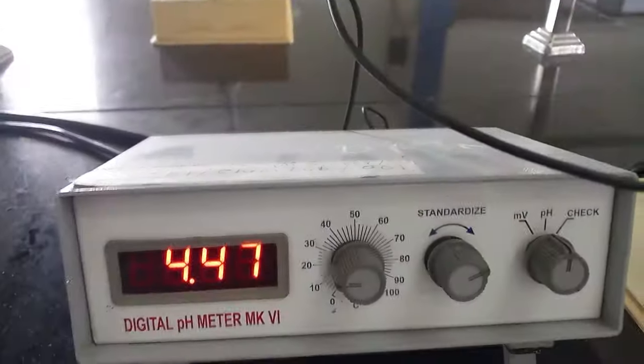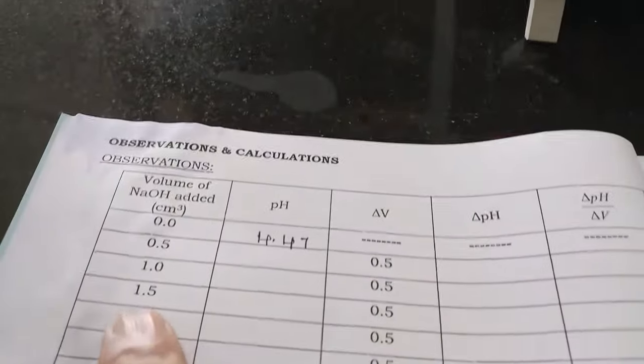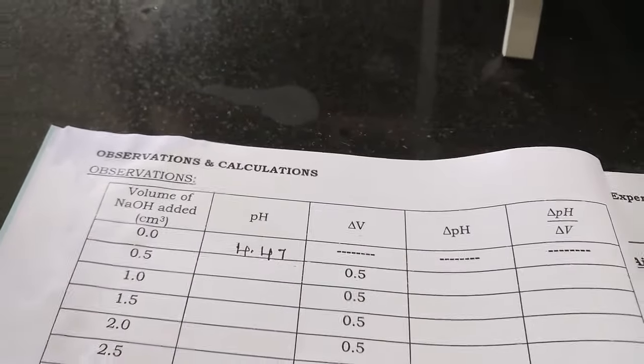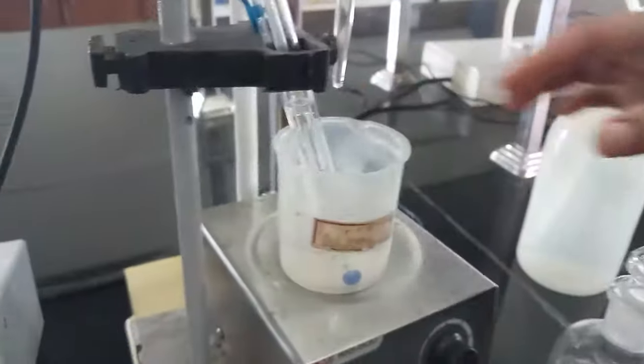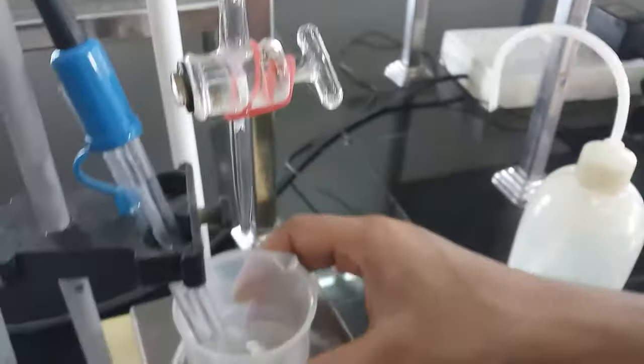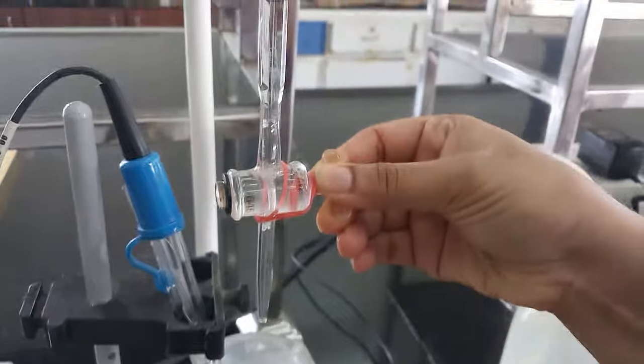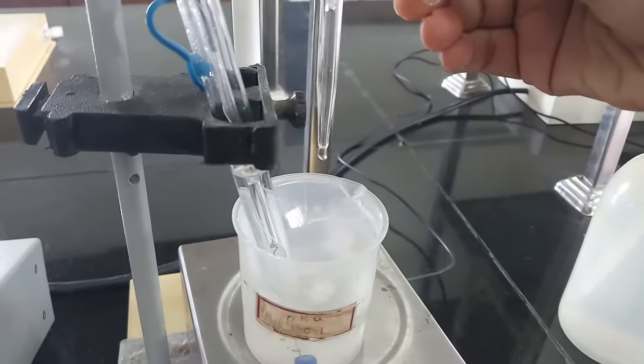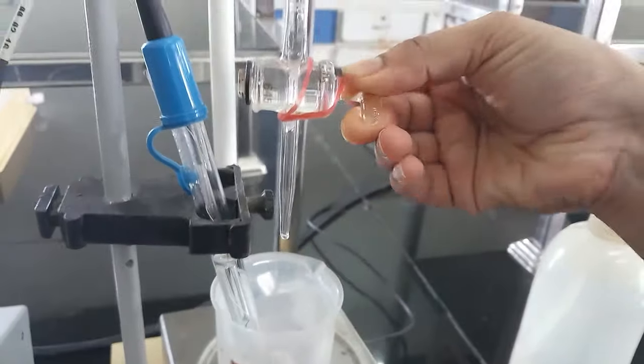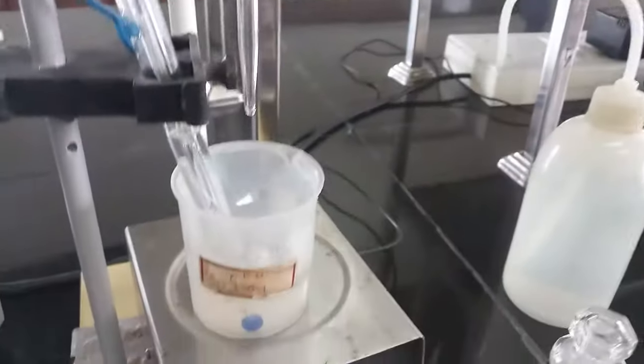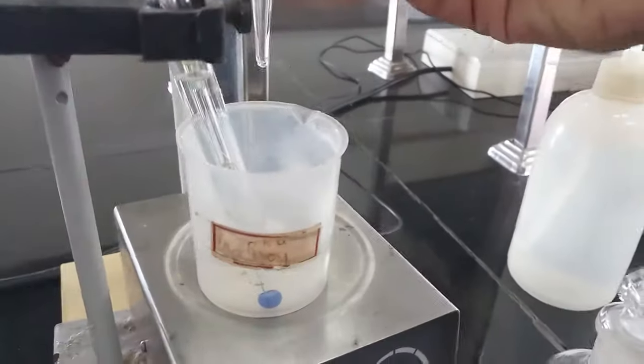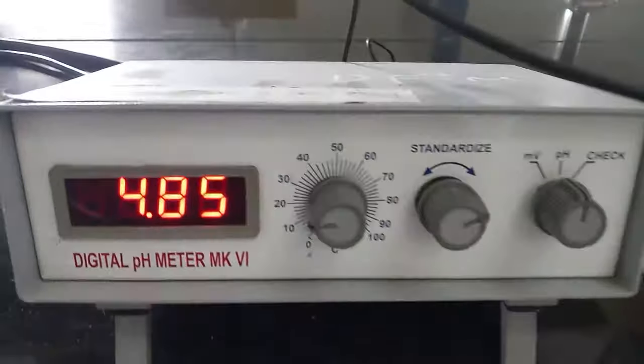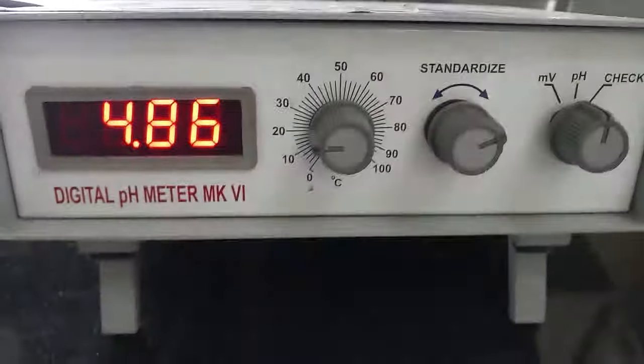Now first value is recorded 4.47 here. We have to add NaOH in 0.5 ml increments continuously, and the magnetic stirrer continuously stirs the solution. Continuously 0.5 ml successive addition of NaOH, and as a result the pH changes.